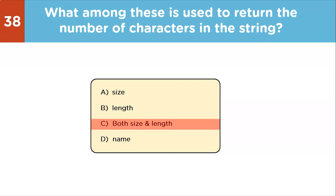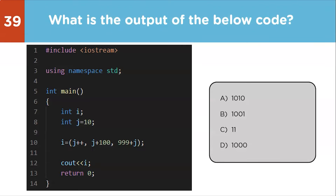The 39th question: what is the output of the below code? The value of j starts at 10. Then j is incremented with j++, making j equal to 11. After that, j is added to 100 and then to 999, giving 11 + 100 + 999 = 1010. This result is assigned to i, so the output is 1010.